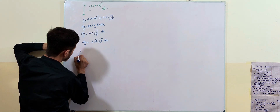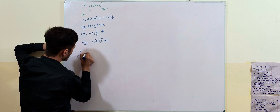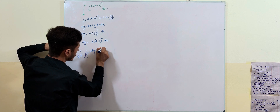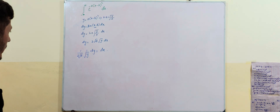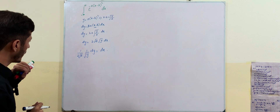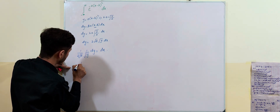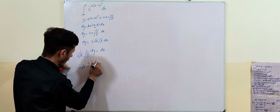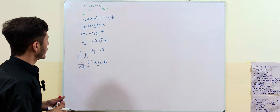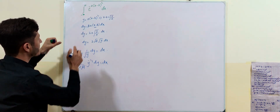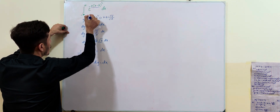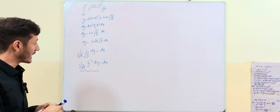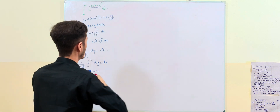Rearranging, we get dx equals (1 divided by 2 times square root of a) times y to the power of minus 1/2, dy. Now we replace dx in the integral with this expression.